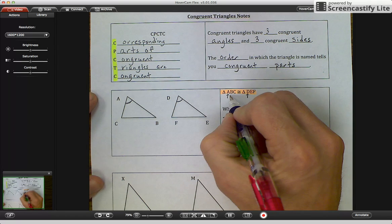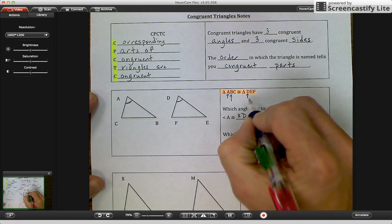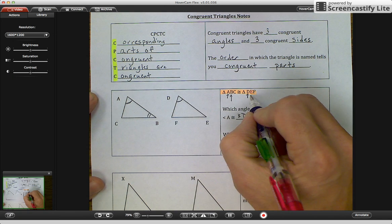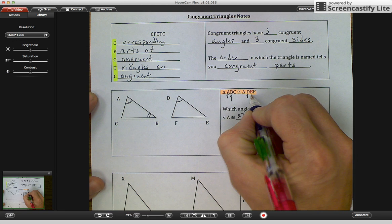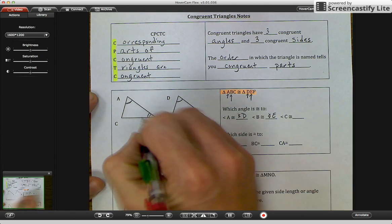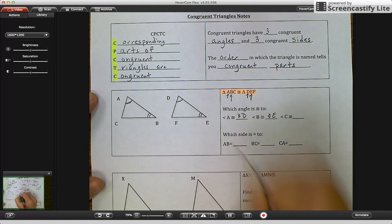Angle B, which is the second letter and second angle, we'll put two marks, is congruent to the second letter here, angle E. So angle E, I will put two marks.